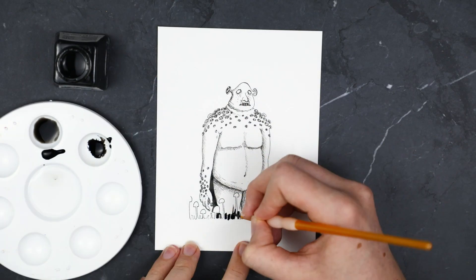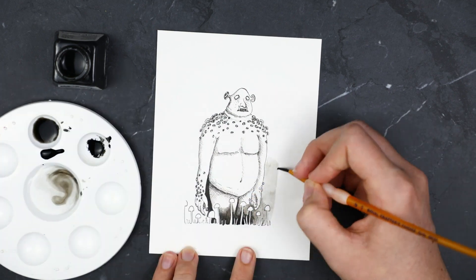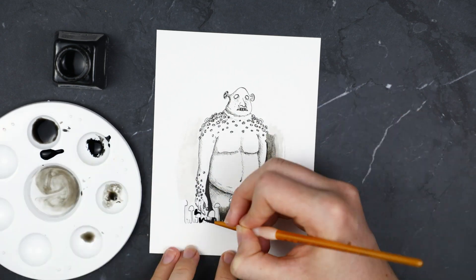As you can see, I experimented a bit with something that is not a fineliner. I used some black india ink and water to darken up the background and make the troll stand out even more.